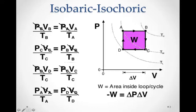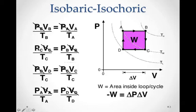Next, let's follow the path from B to C — that's an isochoric process. The volume stays constant from B to C, so we take our ideal gas law proportion again and the volumes cancel. Let's say we don't know the pressure at point C but we do know the pressure at B and the two temperatures. We can solve for the pressure at C by multiplying both sides by the temperature at point C. That's how an isochoric process helps: equal volumes cancel, simplifying the equation.